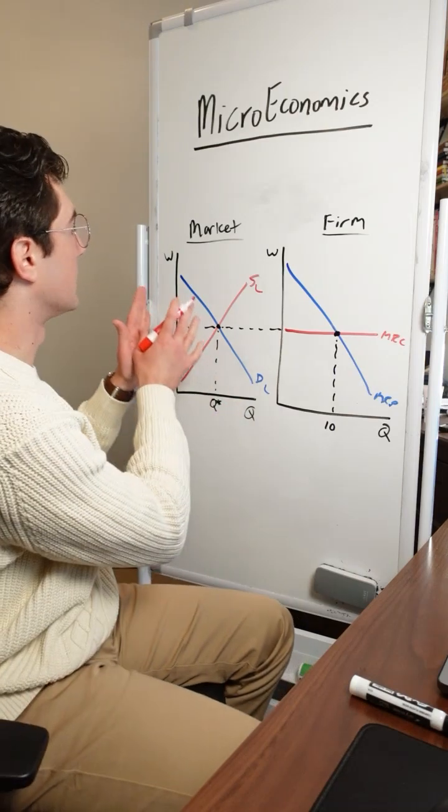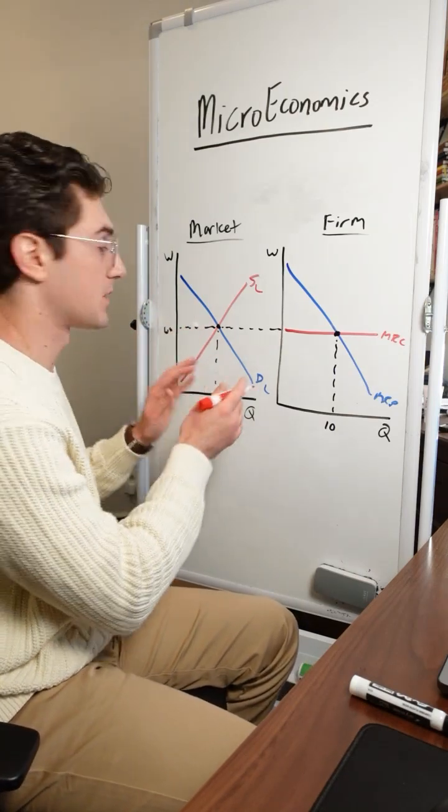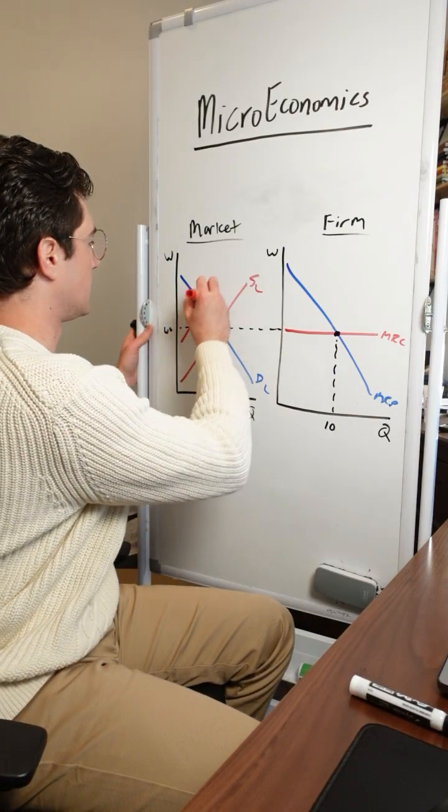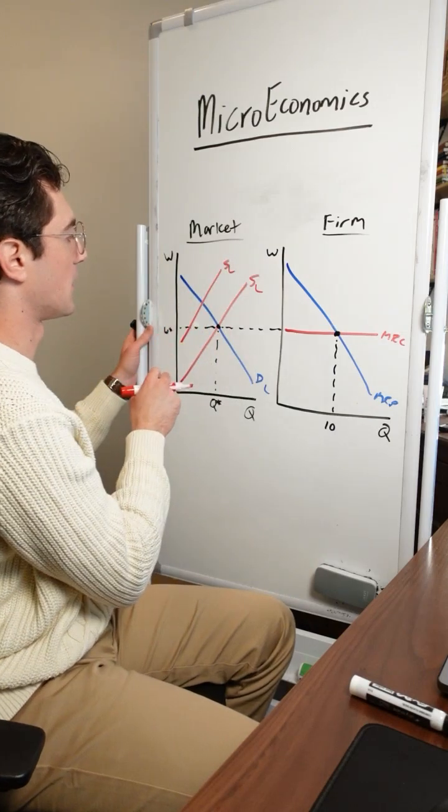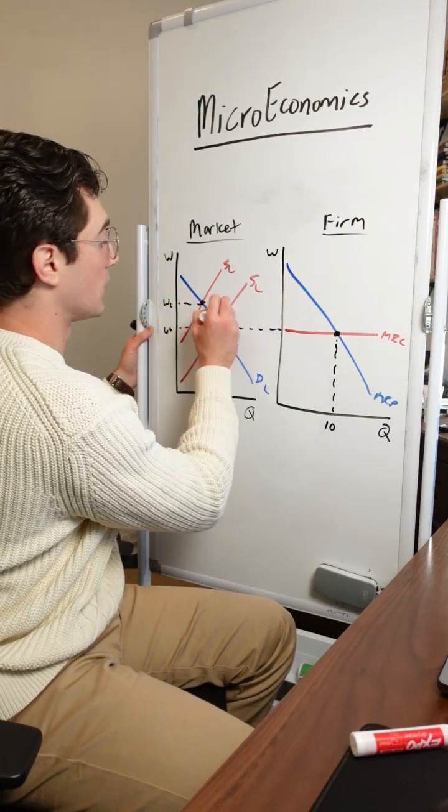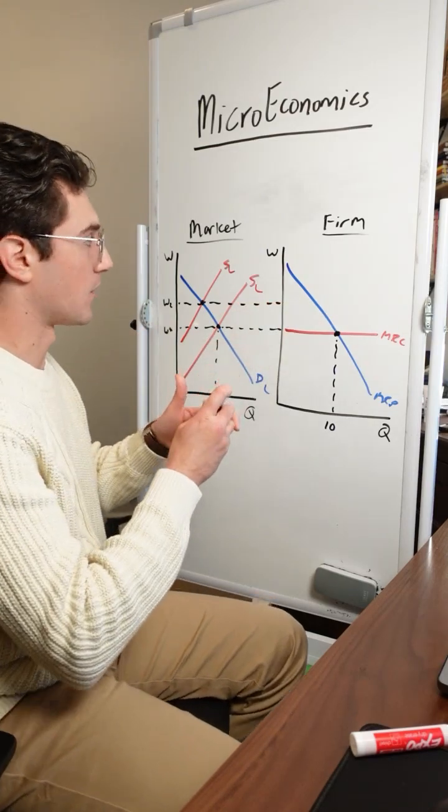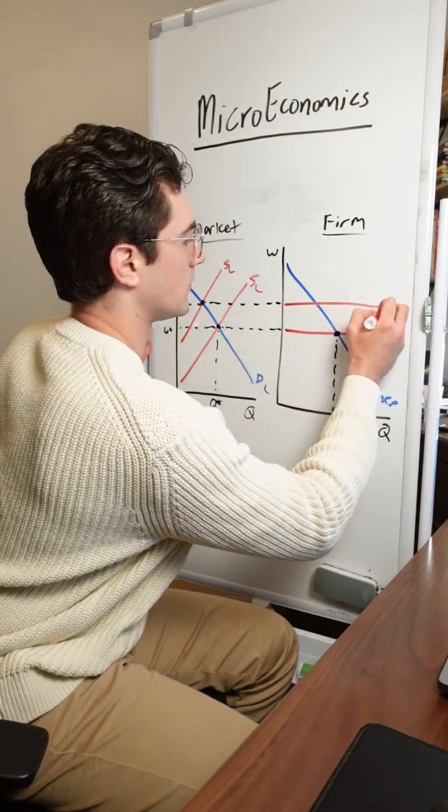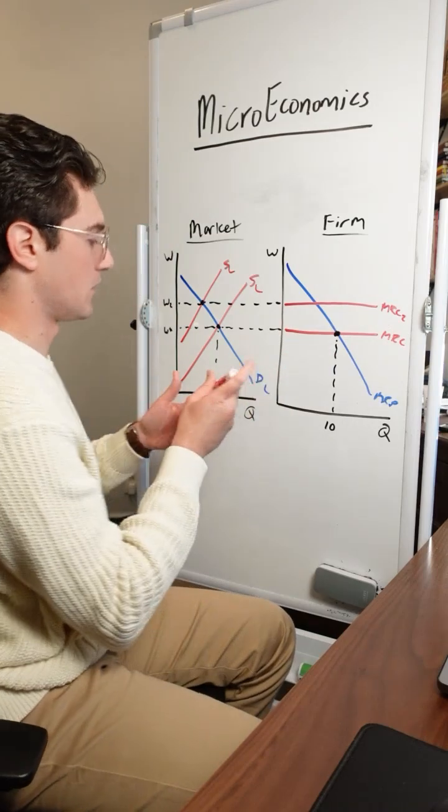Now, what happens if the underlying labor market shifts? Like for example, we get a decrease in labor supply. Well, now the equilibrium wage will rest right here, we'll call this W2. And once again, transfer this over to the individual firm as a new horizontal marginal resource cost line, we'll call marginal resource cost two.